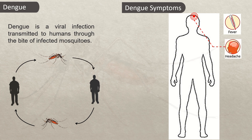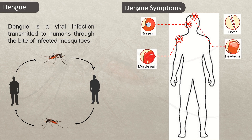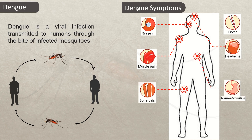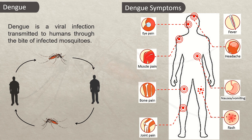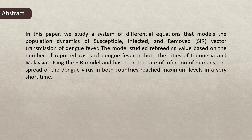What are the symptoms? If someone has fever and one of the following symptoms — headache, eye pain, muscle pain, vomiting, bone pain, joint pain, and rashes — then the person may have dengue.